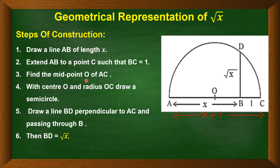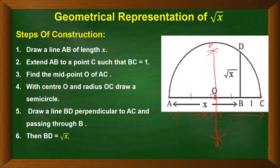Step three: find the midpoint O of AC. To find midpoint O, we construct a perpendicular bisector. Take a center and radius more than half of AC, draw an arc above and below AC. With C as center and the same radius, intersect the previous arcs at P and Q, and join them. The intersection point on AC is the midpoint O, so AO equals OC equals (x+1)/2.